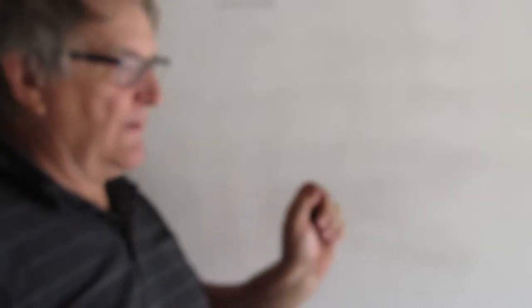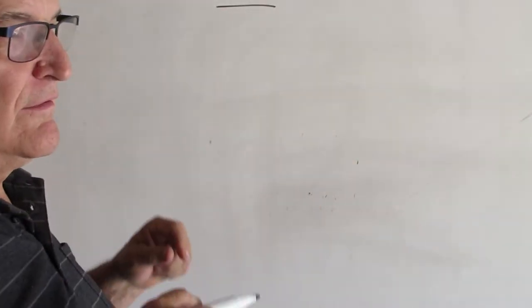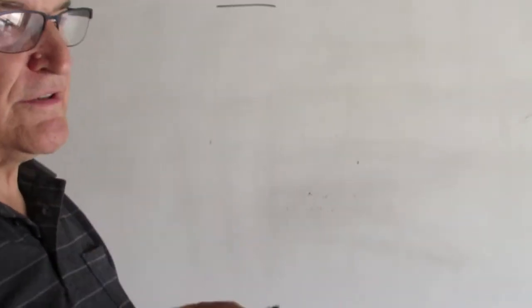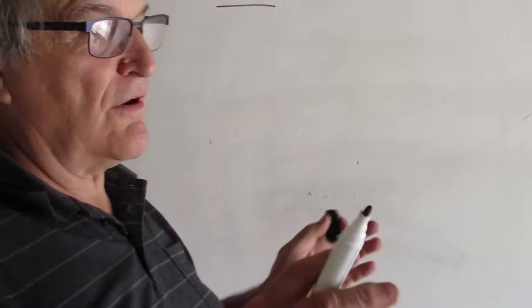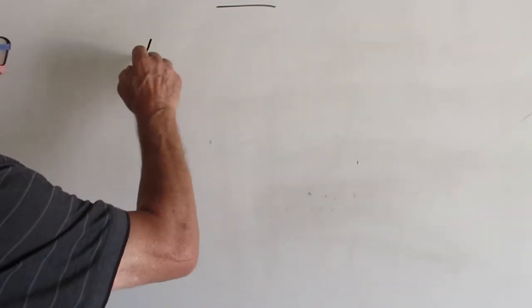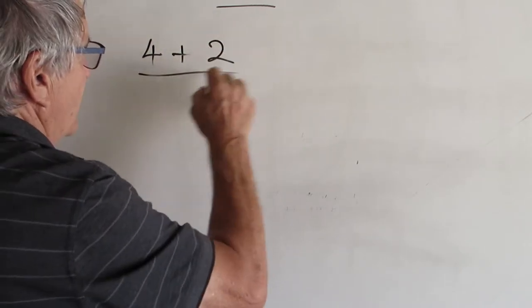The issue with using a calculator is to look out for hidden operations that don't appear really obvious. This one's a classic: 4 plus 2 divided by 3.